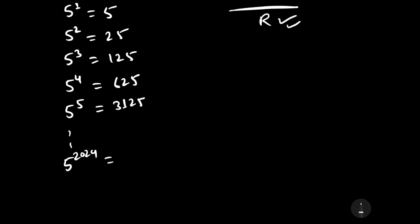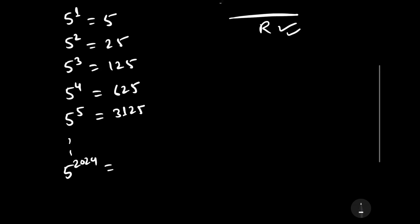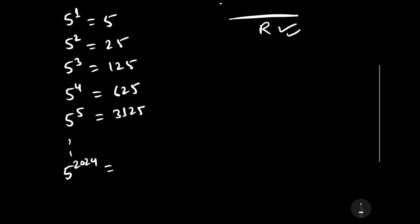Therefore, we will try to observe the pattern in the different powers of 5. By observing, we see that at the units and tens place there is 25 in each case, except for 5 to the power 1.